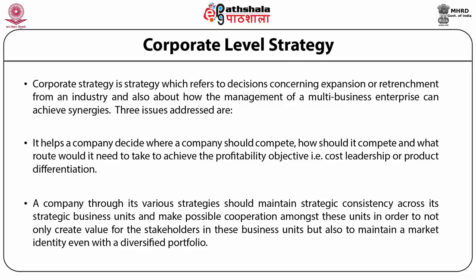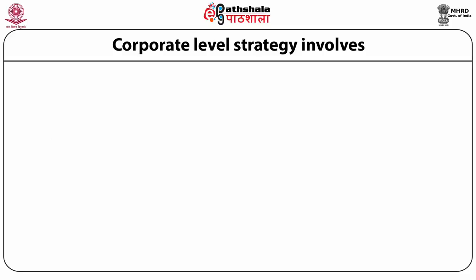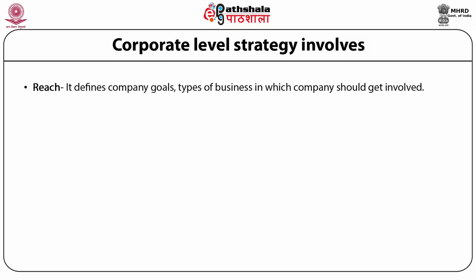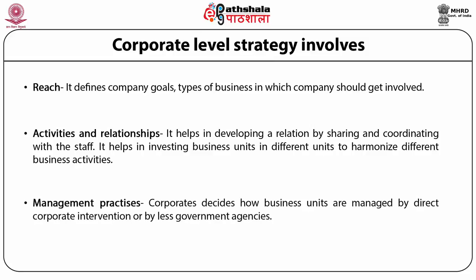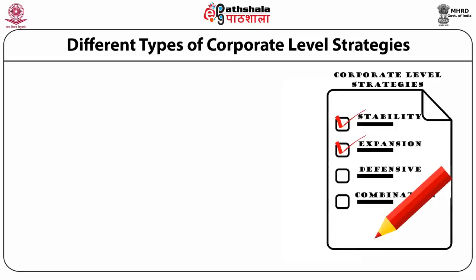A corporate level strategy essentially involves: (a) Reach — it defines company goals and the types of business the company should get involved in; (b) Activities and relationships — it helps in developing relationships by sharing and coordinating with staff and investing in business units to harmonize different business activities; and (c) Management practices — corporates decide how business units are managed, by direct corporate intervention or by other governance mechanisms.